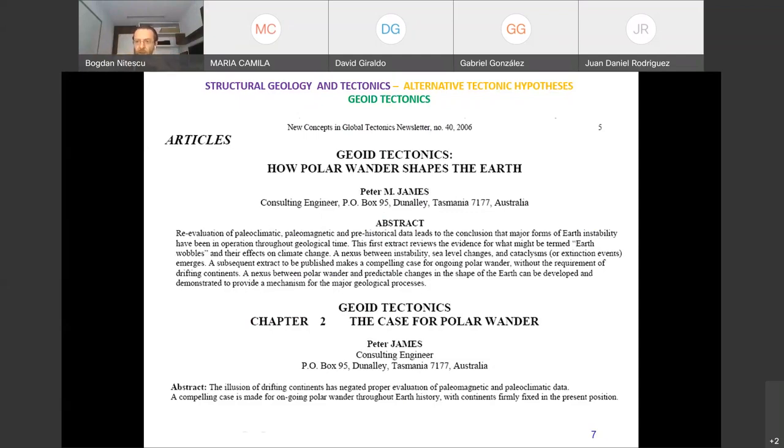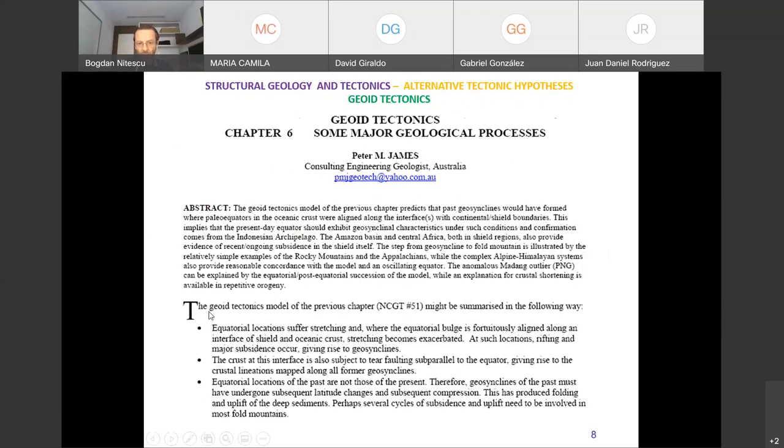And at present day, a place like Indonesia, he's saying, this is where the geosyncline is and where the sedimentation happens at the equator. And in the future, there might be an orogen there. So that's the idea. Yeah. That's the idea. He's promoting. But at least he tries to offer a model. And you can see here, basically, what I was trying to say in this summary. Yeah. He says, equatorial locations suffer stretching. Yeah, because you have the bulge. Yeah, and the idea is that these locations from the equators of the past and are not those of the present. So the dislocations of the past must have undergone subsequent latitude changes and subsequent compression and this produced folding up and uplift and formation of mountains.